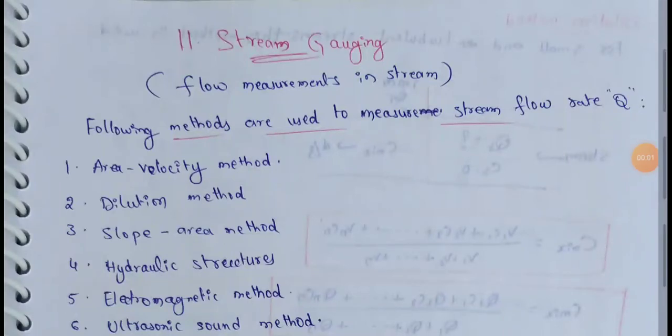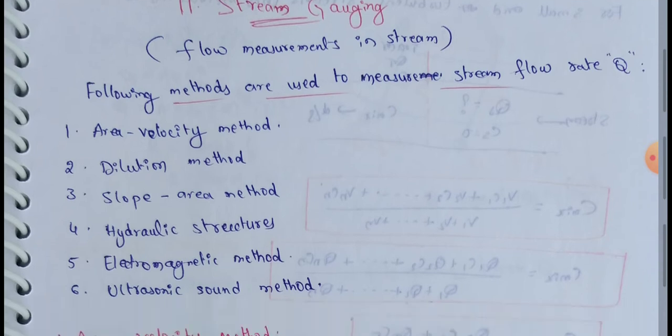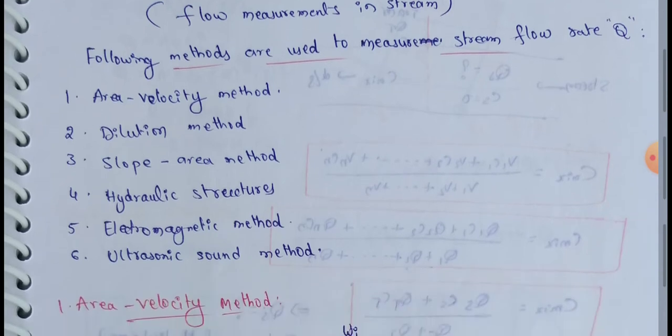Next topic: stream gauging. Flow measurements in streams — we use stream gauges to measure stream flow velocity and discharge rate Q.